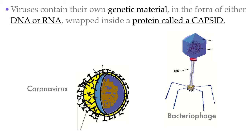Viruses all contain their own genetic material, but that genetic material can be in the form of either DNA or RNA depending on the virus. Some viruses contain DNA — for example, the bacteriophage, which is the type of virus that attacks bacteria. The coronavirus is an RNA virus. The DNA or RNA is wrapped inside a protein called a capsid, which you can see in both the bacteriophage and the coronavirus.